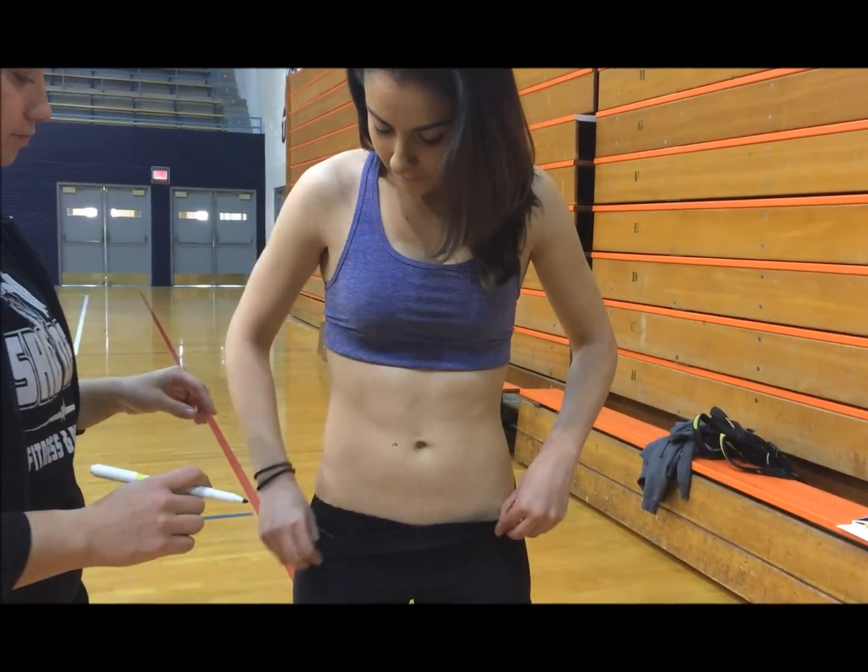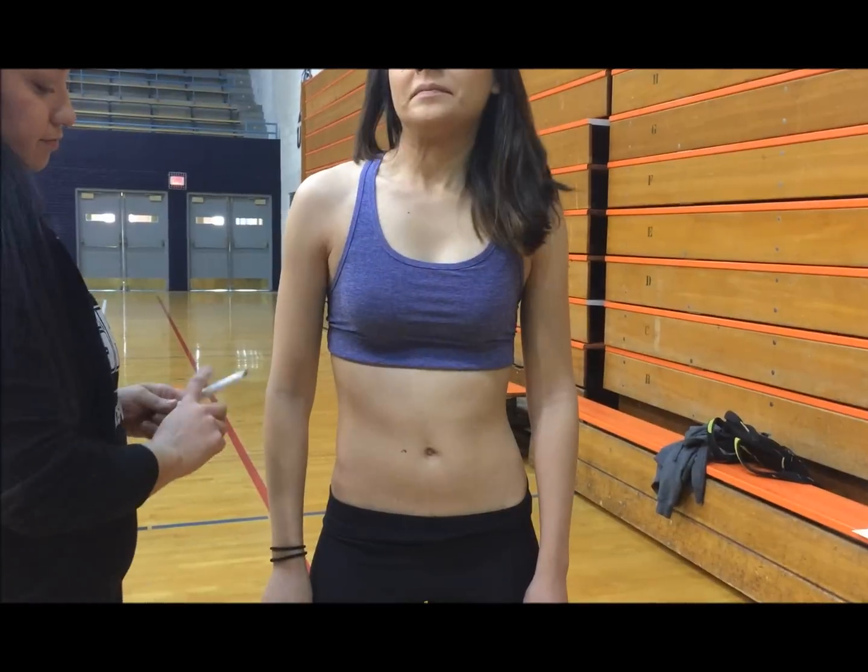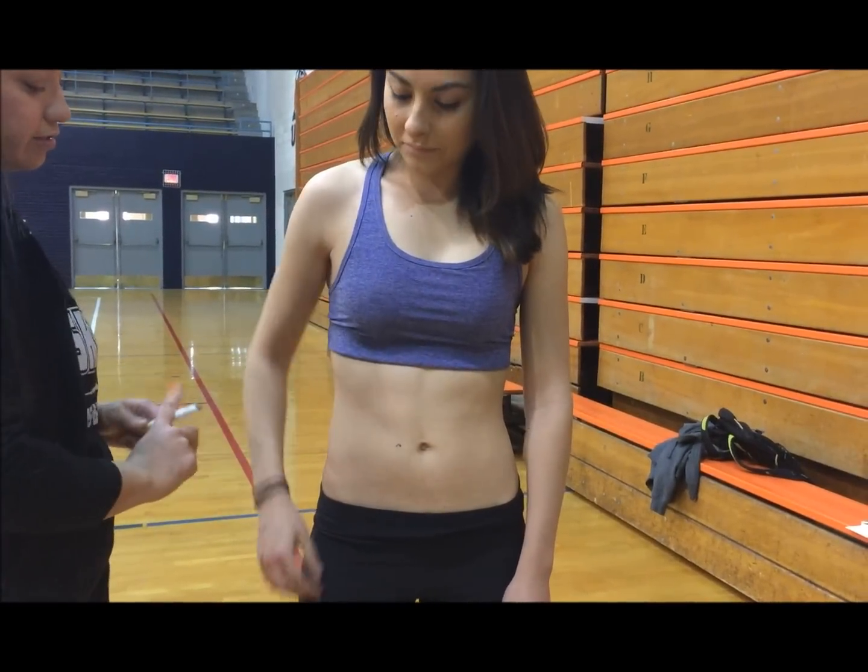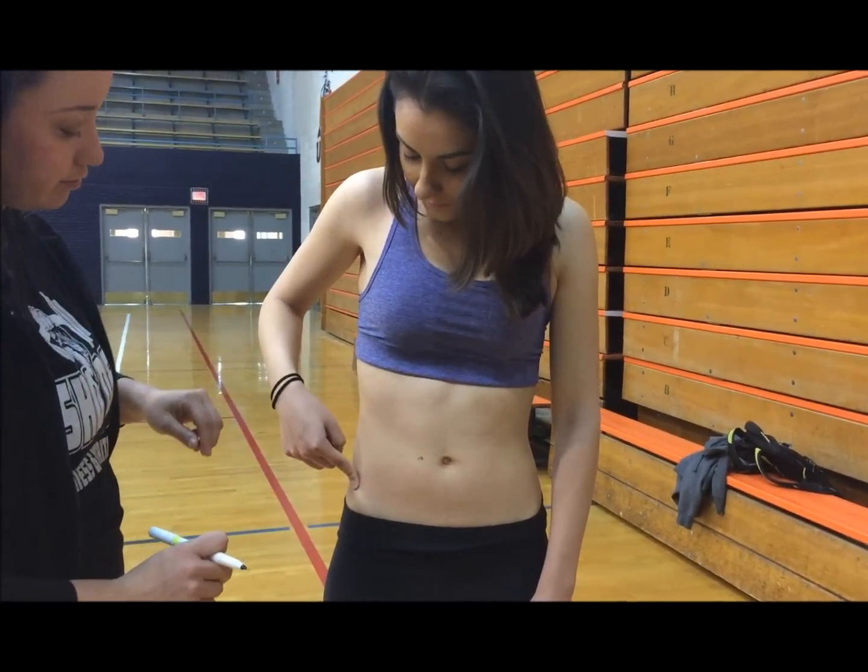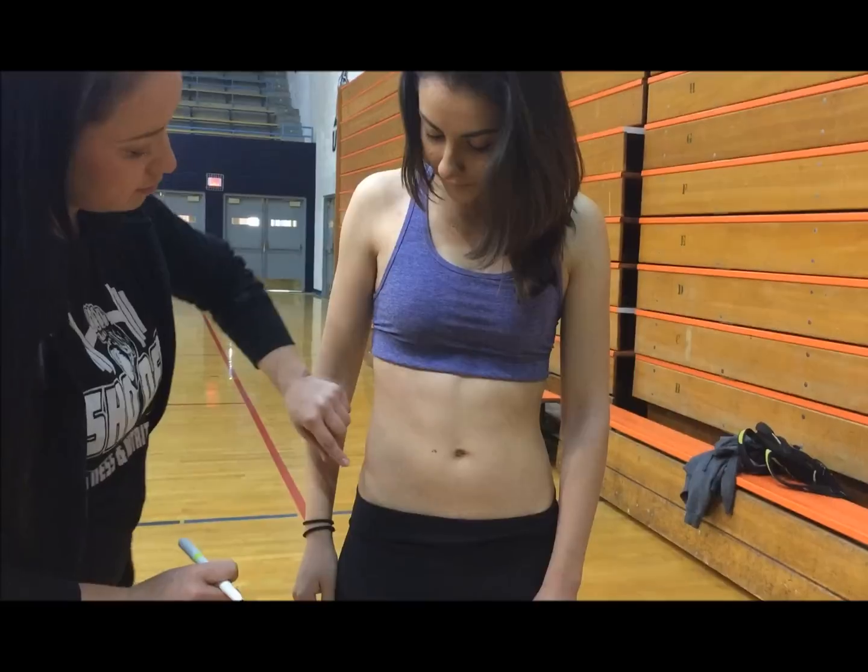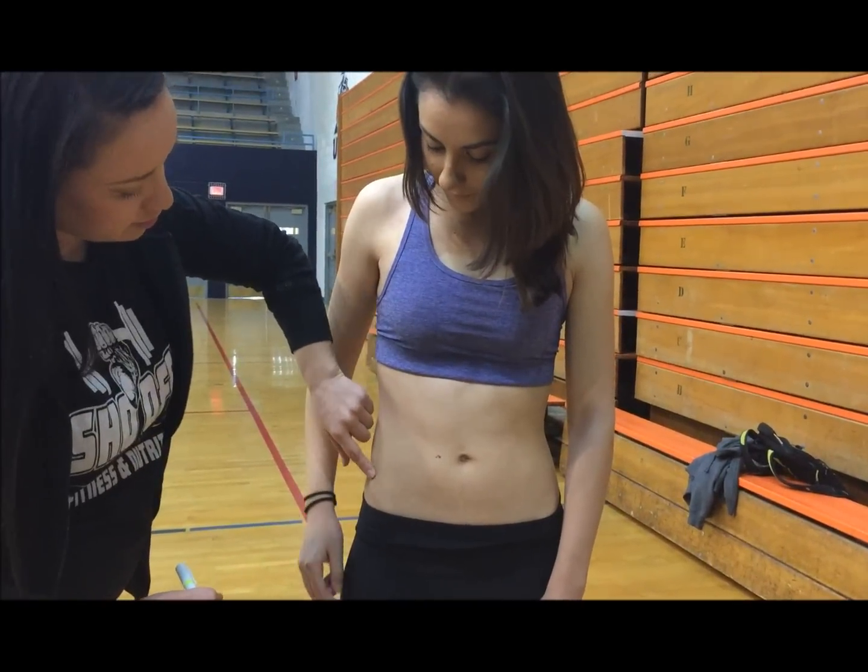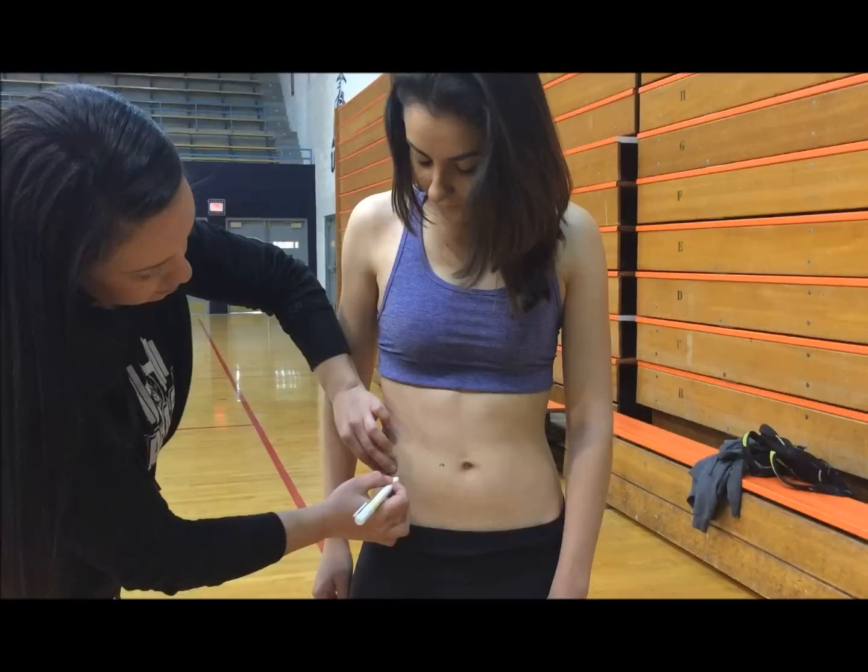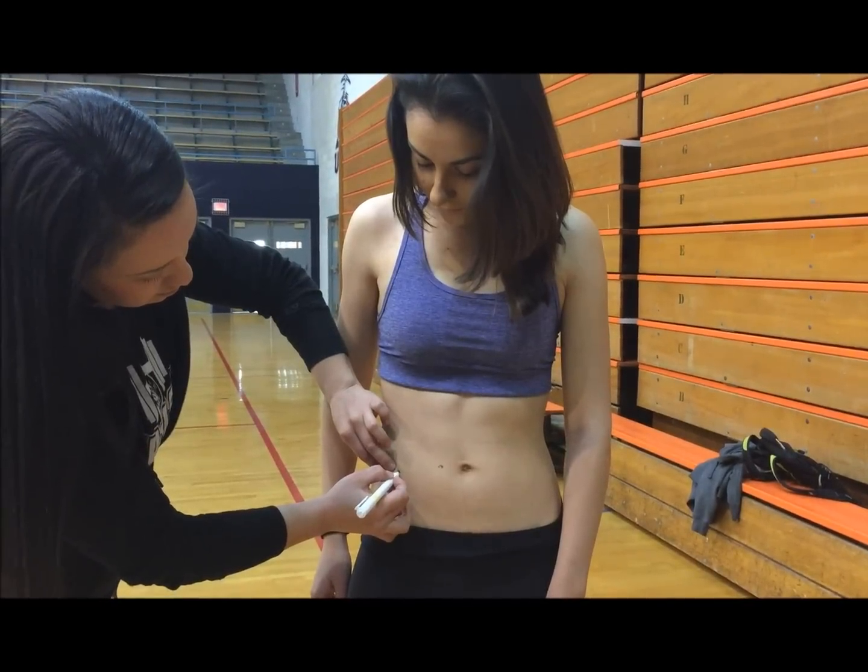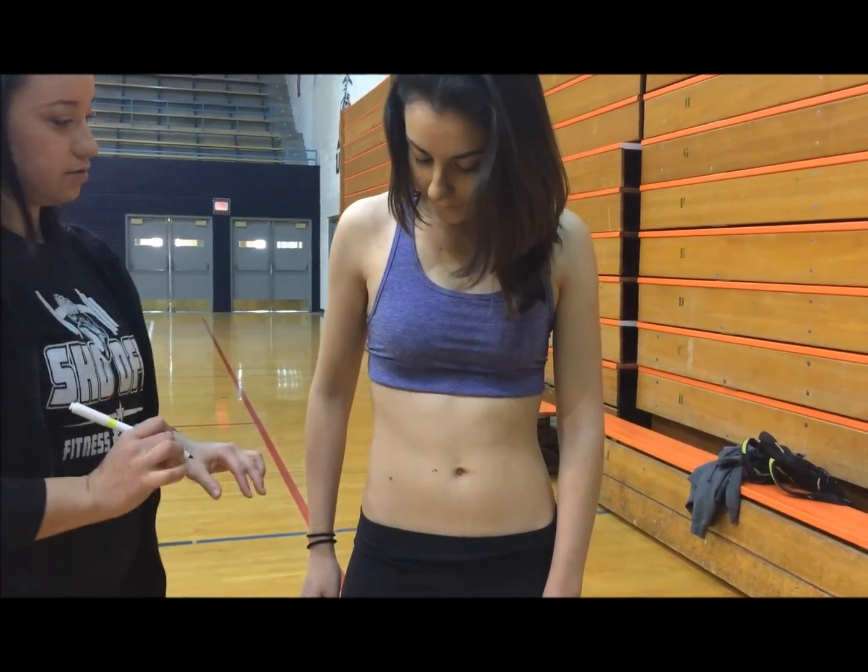Next is the suprailiac. Make sure that it is right by the hip bone. You can have the subject point out their hip bone if that is more comfortable for them. It is the anterior axillary line, immediately superior to the iliac crest, in line with the natural angle of the iliac crest.